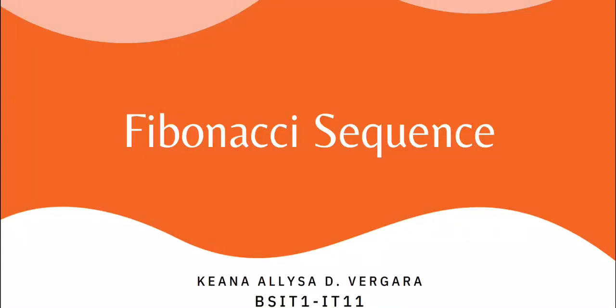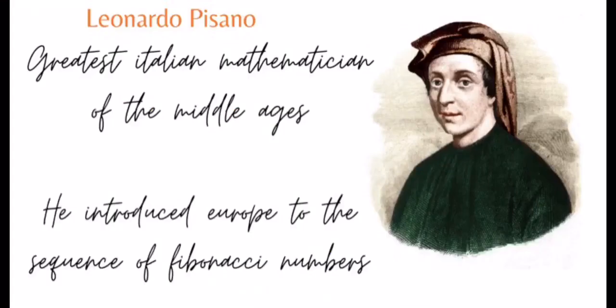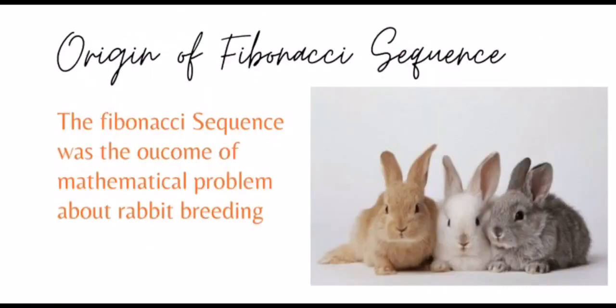Our lesson for today is the Fibonacci sequence. Leonardo Pisano Fibonacci, also known as Leonardo Bonacci or Leonardo of Pisa, was an Italian mathematician from the Republic of Pisa, considered to be the most talented Western mathematician of the Middle Ages. He introduced Europe to the sequence of Fibonacci numbers.